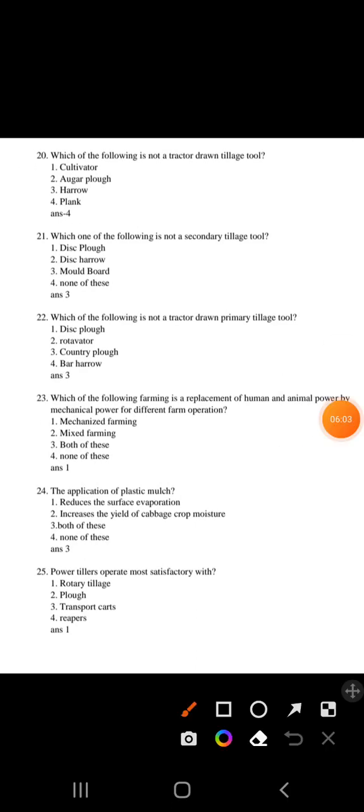Question 20: Which of the following is not a tractor drawn tool? Plank is not a tractor drawn tool. Cultivator, harrow are tractor drawn tools, so fourth option plank is correct. Question 21: Which of the following is not a secondary tillage tool? Plow is a primary tillage tool, okay. So harrow and cultivator are secondary tillage implements. First option will be correct.